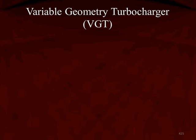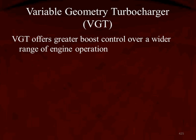Some turbochargers don't use a wastegate. This type is called a Variable Geometry Turbocharger, or VGT. The VGT gives us greater boost control over a wider range of engine operation. A wastegate simply starts to open at a given pressure and controls how much boost is bled off after the turbocharger already made it. A VGT controls how much boost is made in the first place, rather than how much is dumped off.